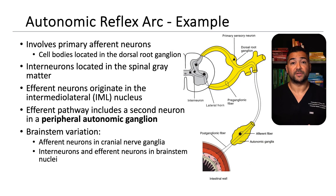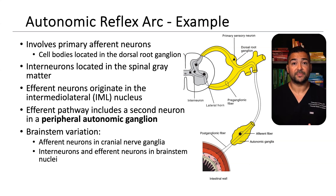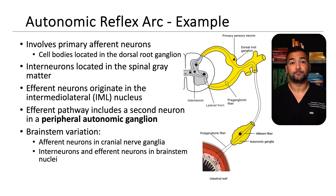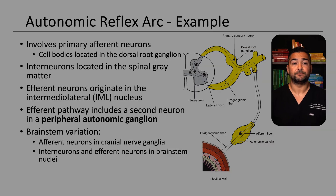Autonomic reflexes include an afferent limb from the viscera, an integration center in the spinal cord or brain stem, and an efferent limb that passes through a peripheral autonomic ganglion. These arcs influence involuntary functions like blood pressure, digestion, and respiratory rate.